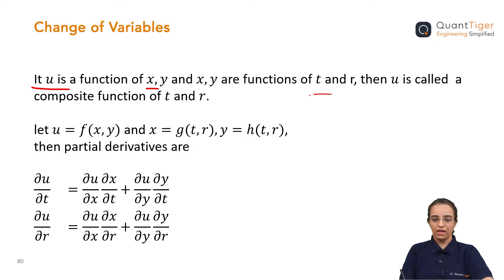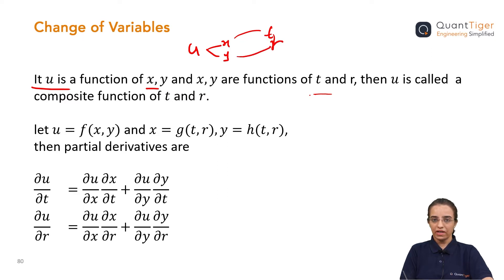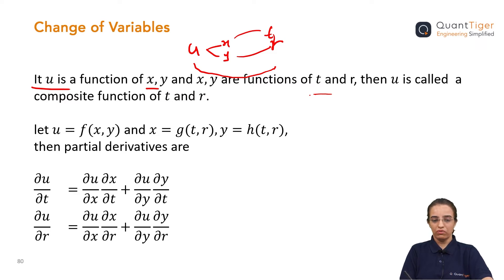If I draw the diagram, u is a function of x and y, and x is again a function of t and r — both are functions of t and r. This is the rough diagram for understanding. In that case, u is a composite function of t and r. Composite means it is made up of different variables — that is what we can say in simple words.